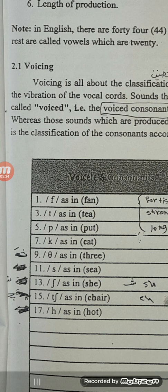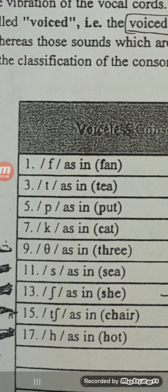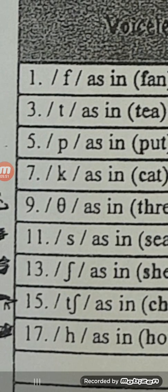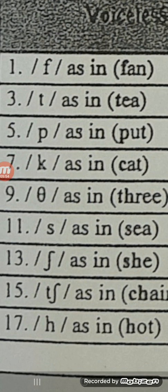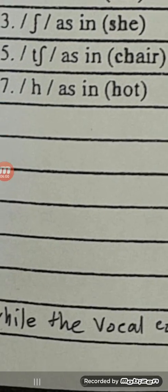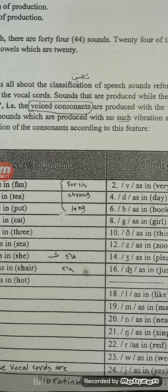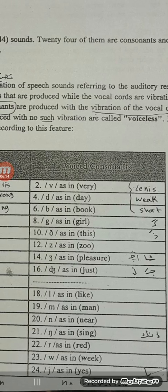Here we have the voiceless, number one, we have FH like fun, TH, PH, KH, and that sound called theta like three, and SH, CH, that sound called SH like she, and we have CH like chair, and we have H. These sounds are called voiceless, there is no vibration through their production.